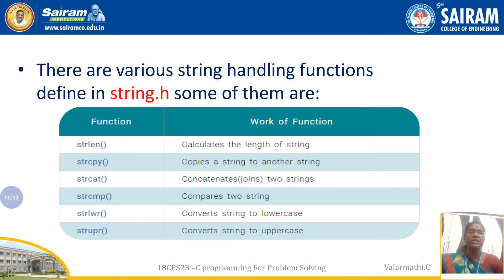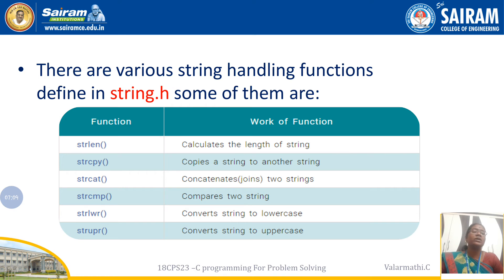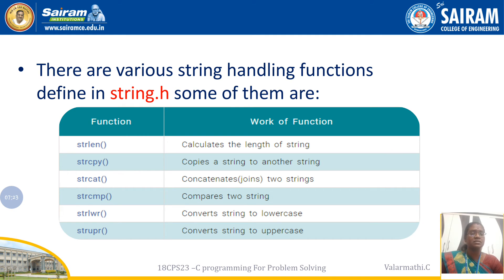The next function is `strlwr`, which converts the entire string to lowercase — whether it was in uppercase or lowercase, it converts everything to lowercase. Then `strupr` converts the entire string to uppercase. These are optional facilities in string.h, while the first four functions — `strlen`, `strcpy`, `strcat`, and `strcmp` — are the basic mandatory functions.